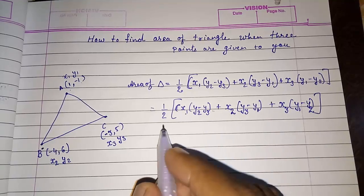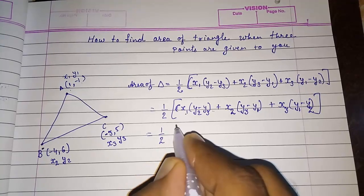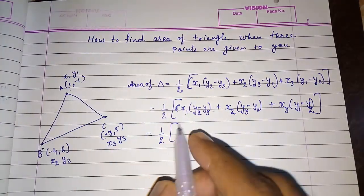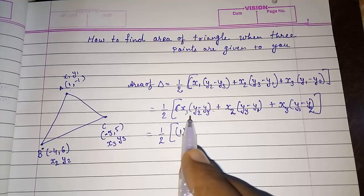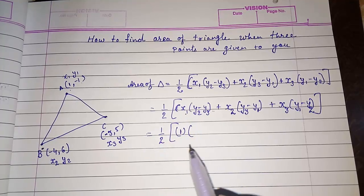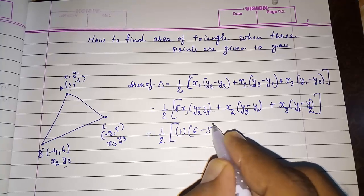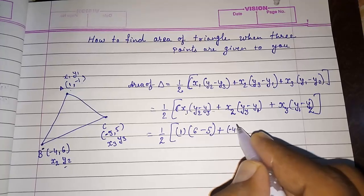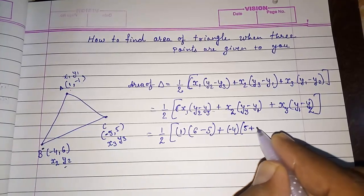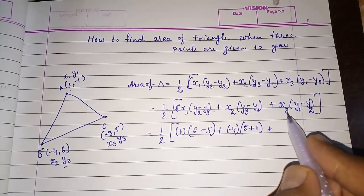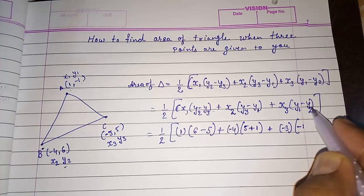A common mistake students make is during addition and subtraction when substituting values. For example, with x1 equal to 1, students often forget to carry the minus sign, and when a minus is already with the number, two minuses make a plus — but they forget this. So be careful: y2 is 6, y3 is 5, x2 is minus 4, y3 is 5, and then minus minus 1 becomes plus 1. Then x3 is minus 3, y1 is minus 1, and minus y2 is minus 6.